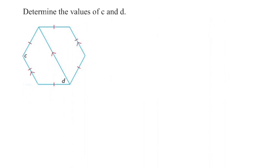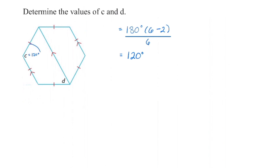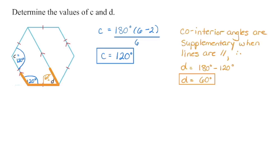Sometimes you need to determine missing angle measures with no original numbers given — this typically occurs when you have a regular polygon. Here we have a regular hexagon with two sets of parallel lines. We start by using the formula to find each interior angle: [(6 − 2) × 180] ÷ 6 = 120 degrees. So angle C is 120 degrees, and likewise another hexagon interior angle is 120 degrees. Since one line is parallel to the other, those two angles are co-interior angles and must be supplementary — adding to 180 — so angle D is 60 degrees. Use the interior angle formula first, then apply angle relationship rules to find remaining values.